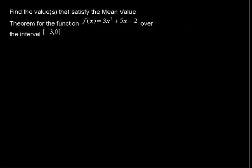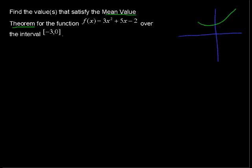The mean value theorem for derivatives says this: if you have two points on a function — two points on a graph — let's say we have this point and this point, and the x-coordinate of the first point is a and the x-coordinate of the next point is b.